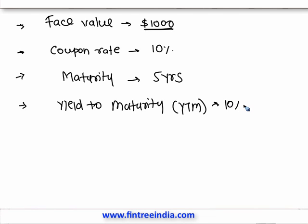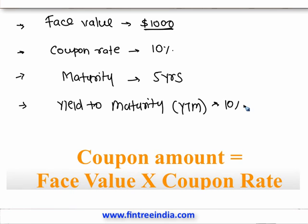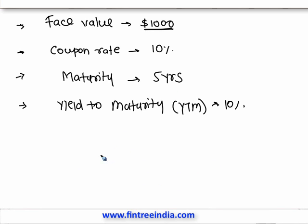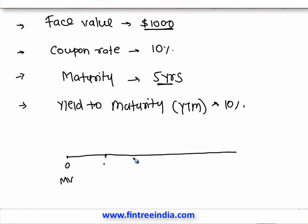Coupon rate is the amount of cash flow paid to you every year, and it is always calculated as a percentage of face value. So when we have this bond, let's look at the cash flows on a timeline. This is time zero. At time zero, we will purchase the bond at market value — how much that is, we don't know yet; we're going to learn to calculate that. The maturity of the bond is 5 years, so we have year 1, year 2, year 3, year 4, and year 5.